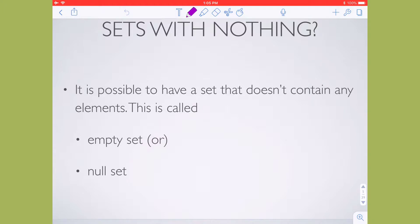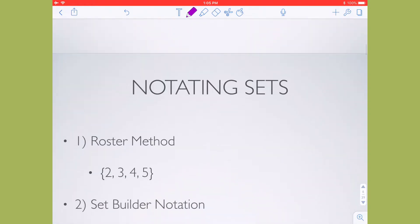There can be sets that have nothing in them. This is called an empty set or a null set. And we actually notate this with a circle and a slash through it. A lot of people write their zeros that way, and I tell individuals that as they get into upper level math, you don't want to write your zeros like that anymore. Because that symbol actually means something in the world of math. And it means that you're looking at a set that doesn't have anything in it.